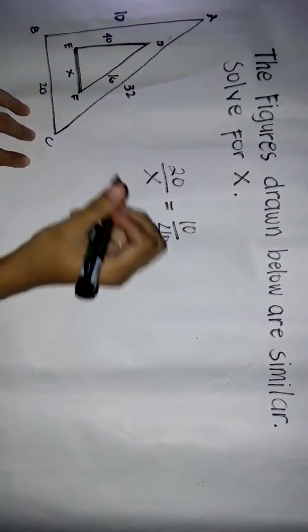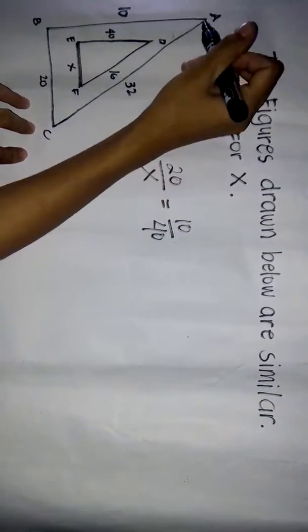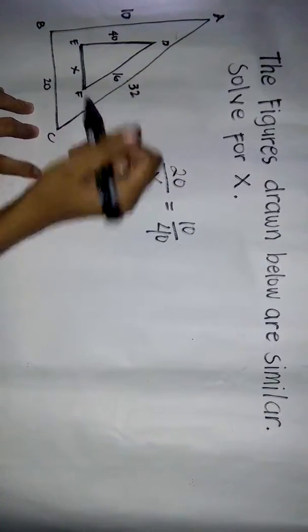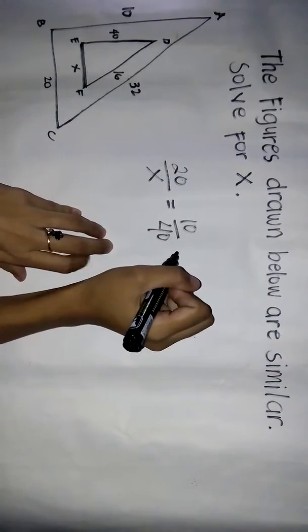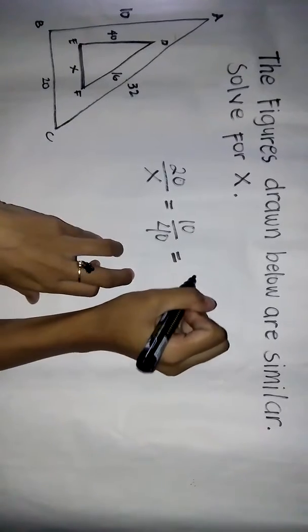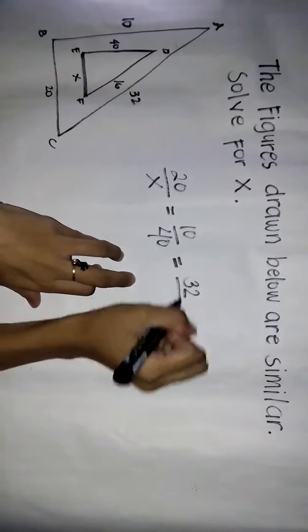Then AC corresponds to DF. So 20 over X equals 10 over 40 equals 32 over 16.